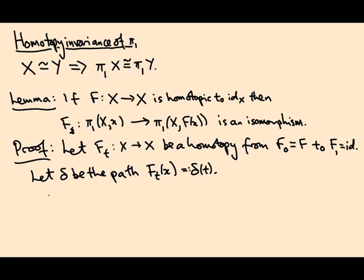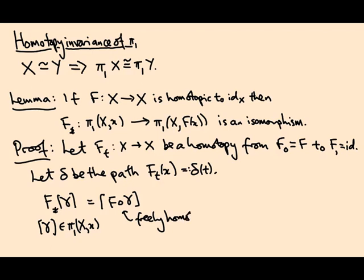So what happens if we compute f_star of a loop γ where γ is in π₁(X,x)? Well this is the homotopy class of f composed with γ, and I claim this loop is freely homotopic to γ.